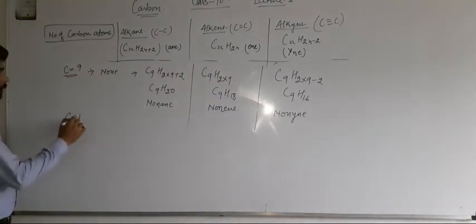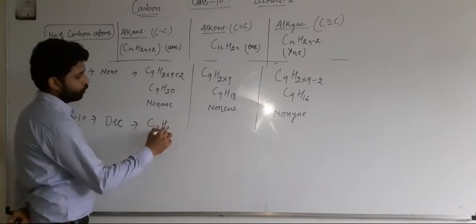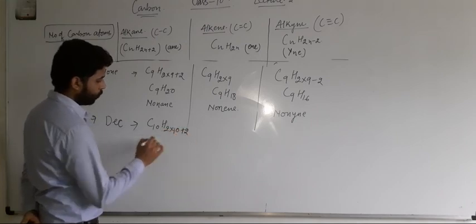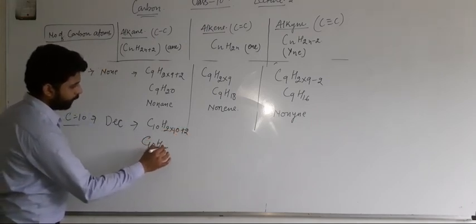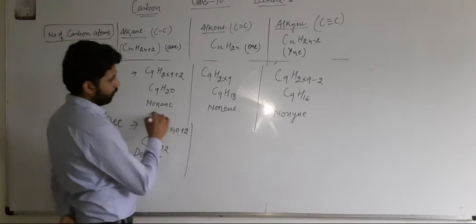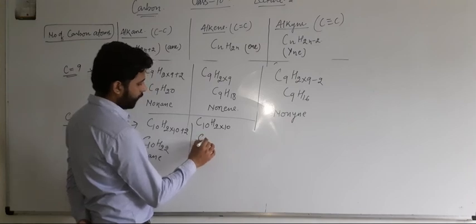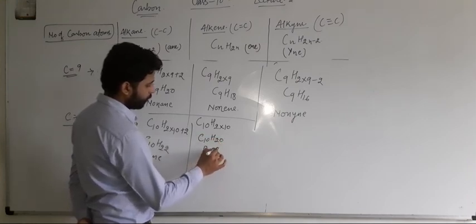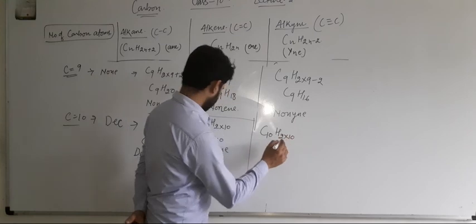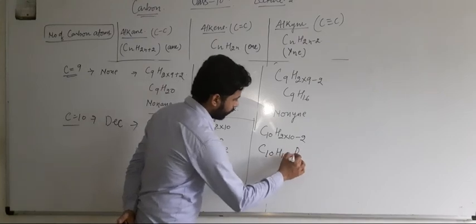For ten carbons, decane is C10H2 into 10 plus 2, which is C10H22. Decene is C10H20. And decyne is C10H2 into 10 minus 2, which is C10H18.